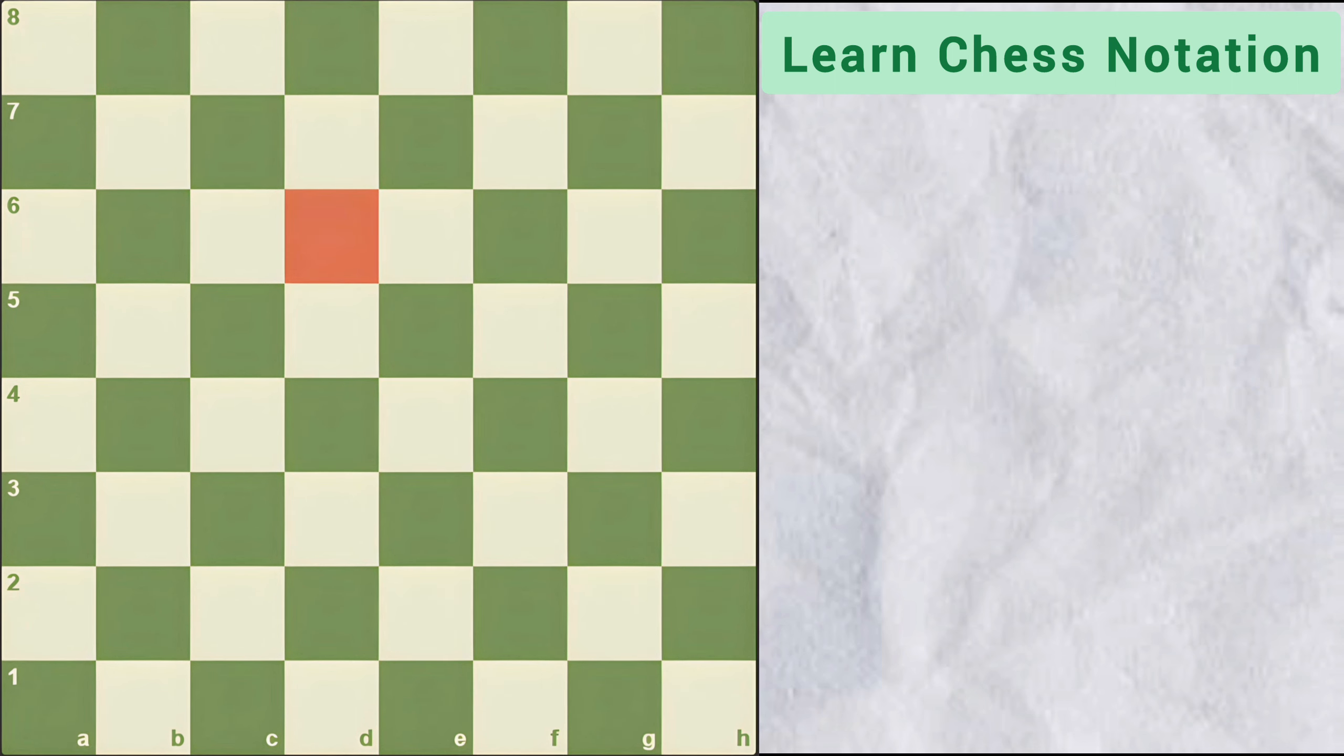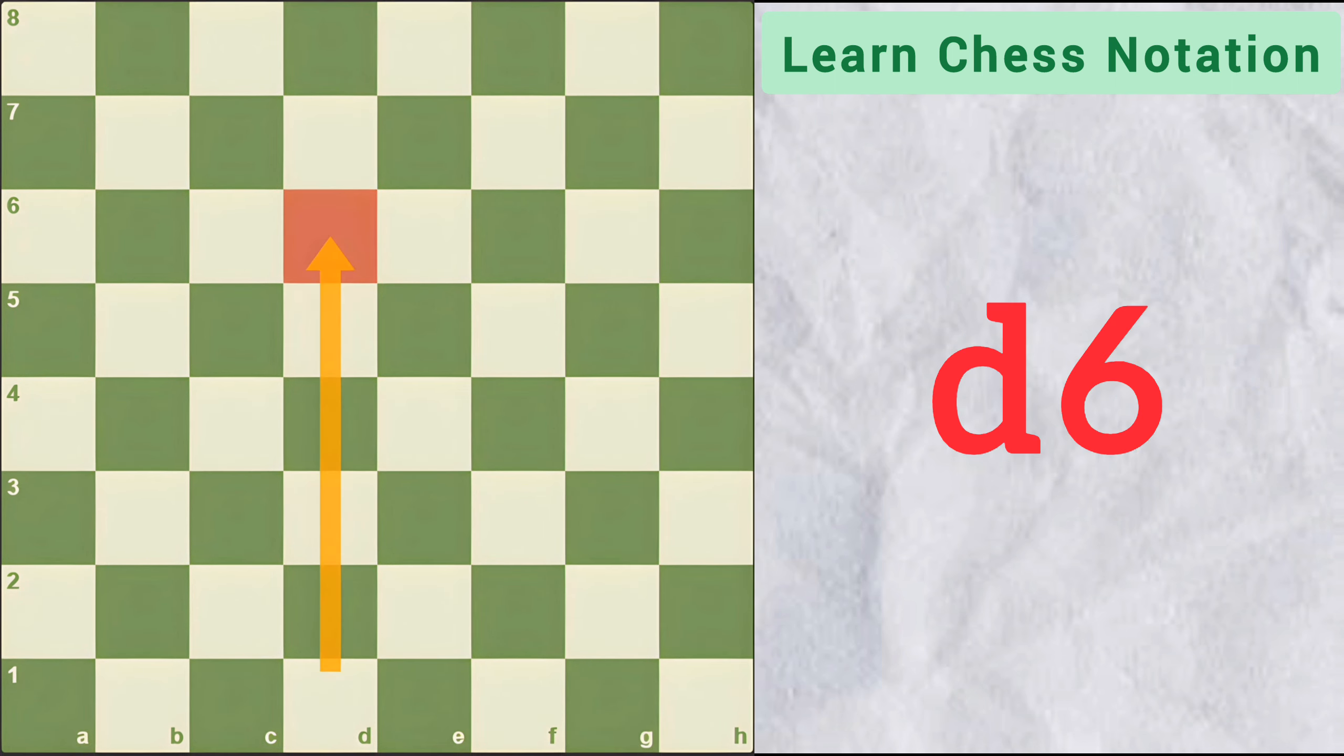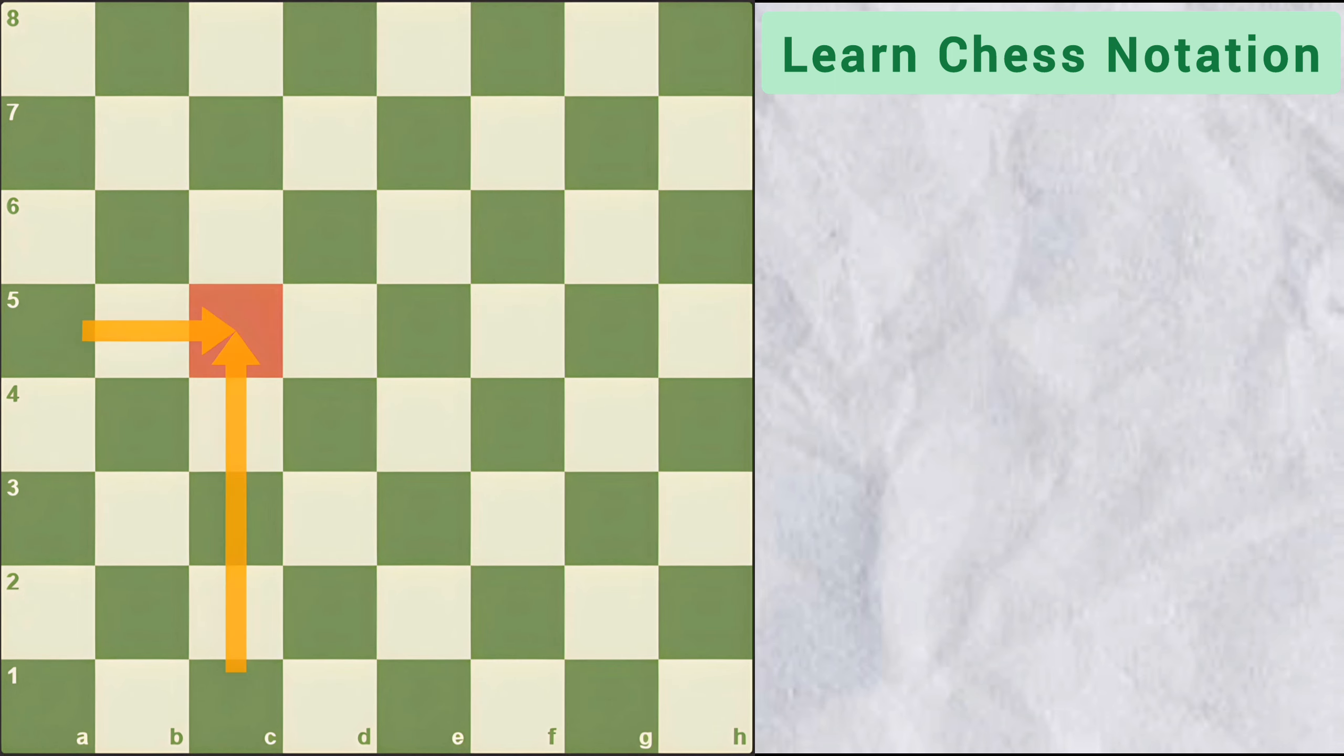Similarly, this square will be called as D6. The D denotes the file name and 6 is the number of the rank. This square is H8 and this one is C5.